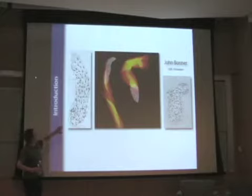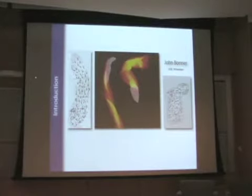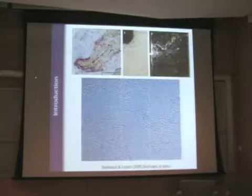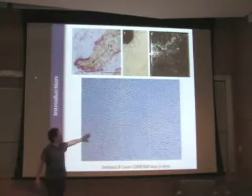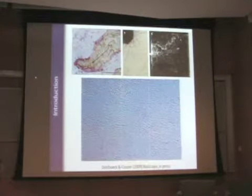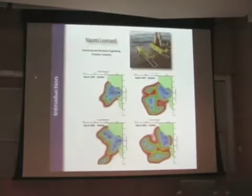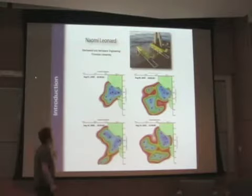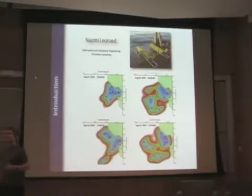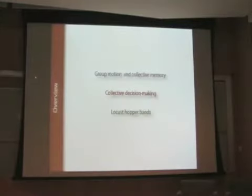When you integrate these behavioral rules, we get the types of collective patterns we see in nature. Individuals are responding to local conditions but also reconciling that with goal-oriented behavior such as during migration. They may know they get fed at certain times, so you have this reconciliation of memory-based effects and local information. They also perceive threats and maintain a vacuole around individuals to give themselves enough time to escape.